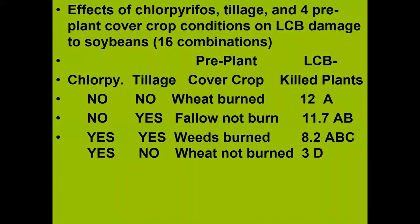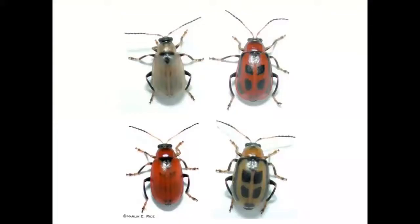Research done in Tifton, Georgia in the early 80s showed that when we artificially infested small plots of soybeans with lesser cornstalk borers, we could kill the larvae better using chlorpyrifos than if we did not. Where we burned the wheat versus not burning the wheat, we had lesser damage reduced in those plots. Burning a cover crop has been reported to increase the number of moths that move into the field after planting, as it attracts the moths.